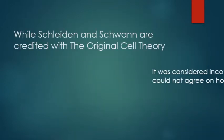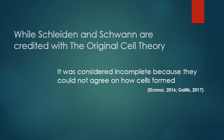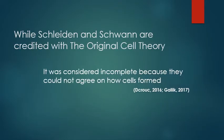While Schleiden and Schwann are credited with the original cell theory, it was considered incomplete because they could not agree on how cells form.